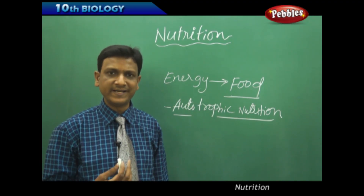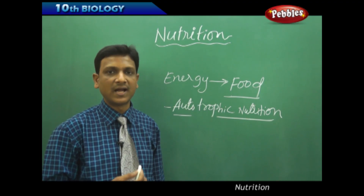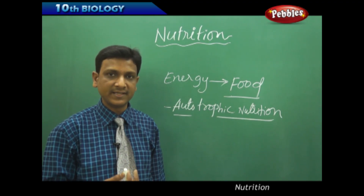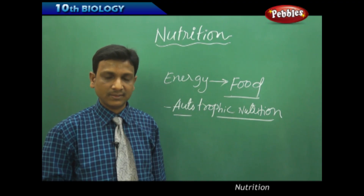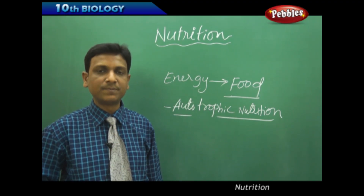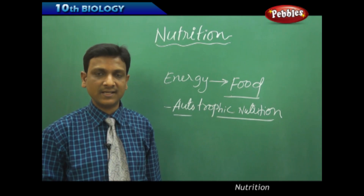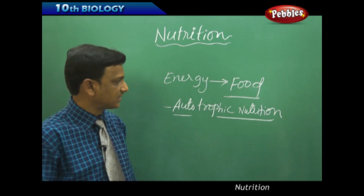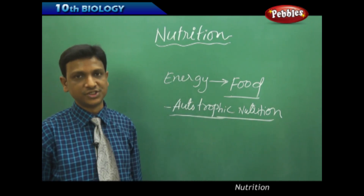We eat vegetables, we eat eggs — these are the products of plants and animals. We are simply acquiring, gathering and eating them, but not producing them. Whereas certain organisms prepare their own food material by using simple substances. Such a mode of nutrition is called autotrophic nutrition.